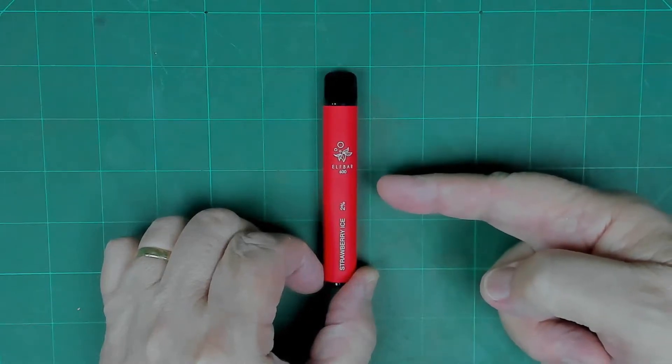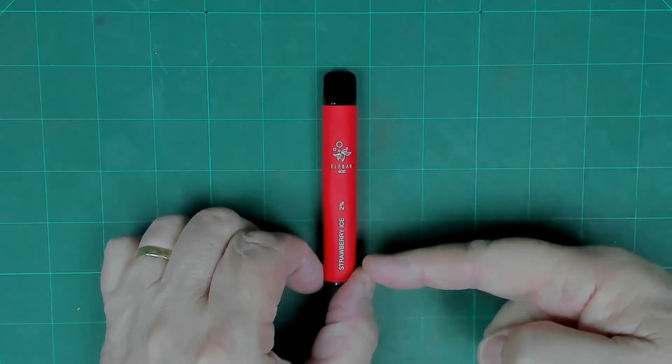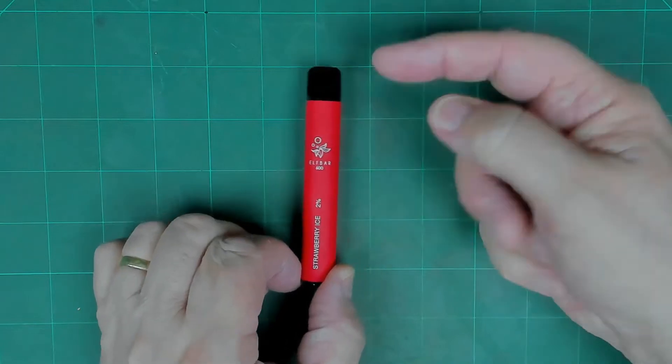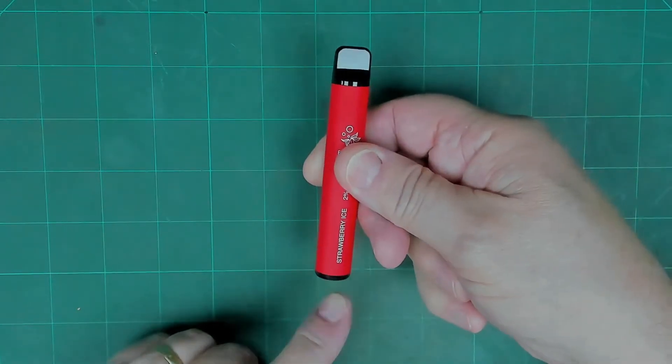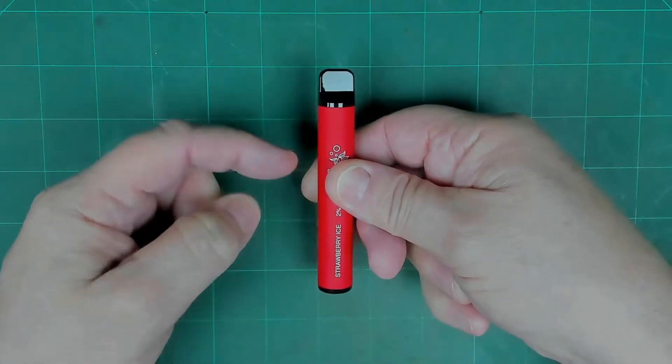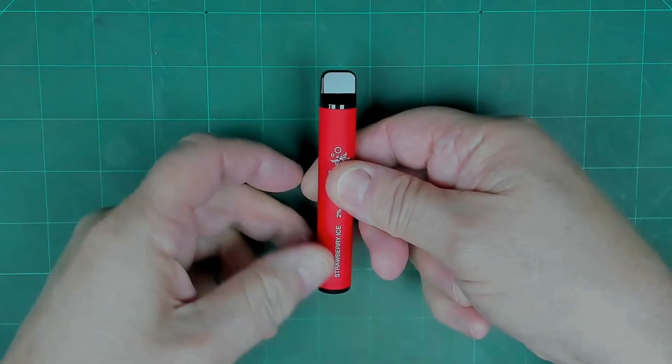If you've got one of these or found one of these on the street, it is a vaping device. You suck here, it draws air in through a hole here, and that triggers an element, heats it up, and generates a vapor.